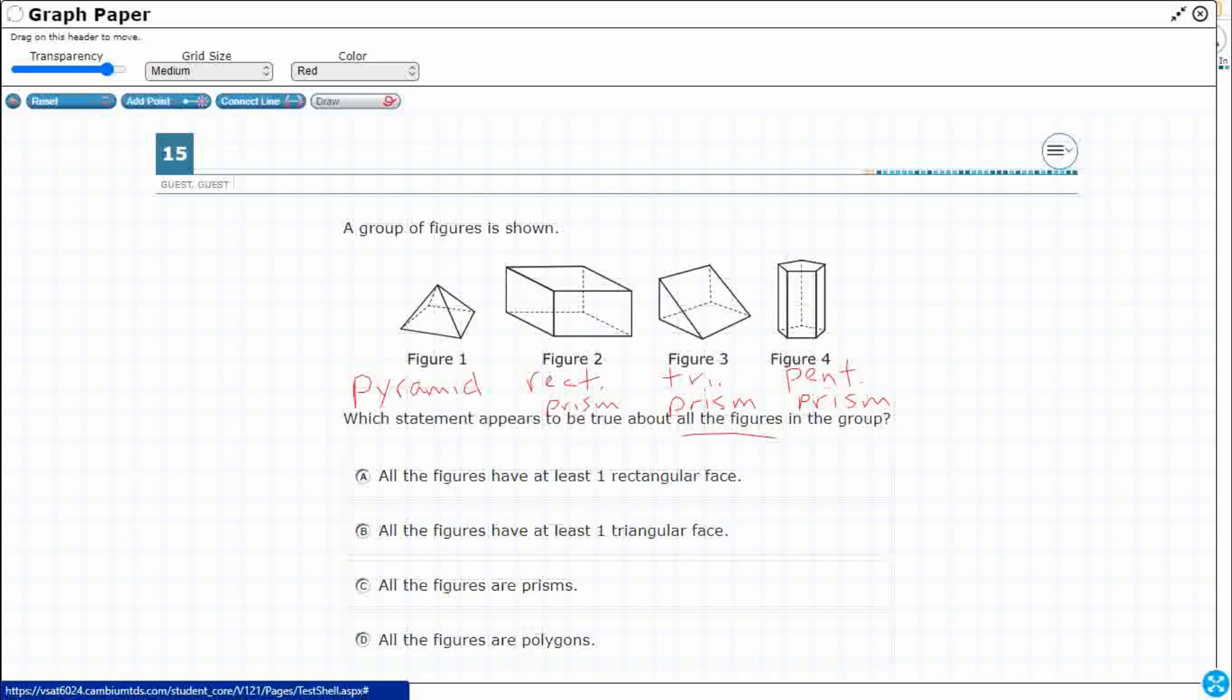All right, so all the figures have at least one rectangular face. Well, the pyramid, yes. The rectangular, everything is a rectangle, let's at least say that one, yes. Figure 3, yeah? Even though it's a triangular prism, the two bases are connected by rectangles.